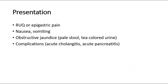The patient may present with right upper quadrant pain or epigastric pain. This type of pain is often more prolonged compared to biliary colic. They may also have nausea and vomiting, and signs of obstructive jaundice such as pale-coloured stool or tea-coloured urine. Complications include acute cholangitis, presenting with jaundice, abdominal pain, and fever with chills. Other complications include acute pancreatitis, presenting with epigastric pain radiating to the back, nausea, and vomiting.